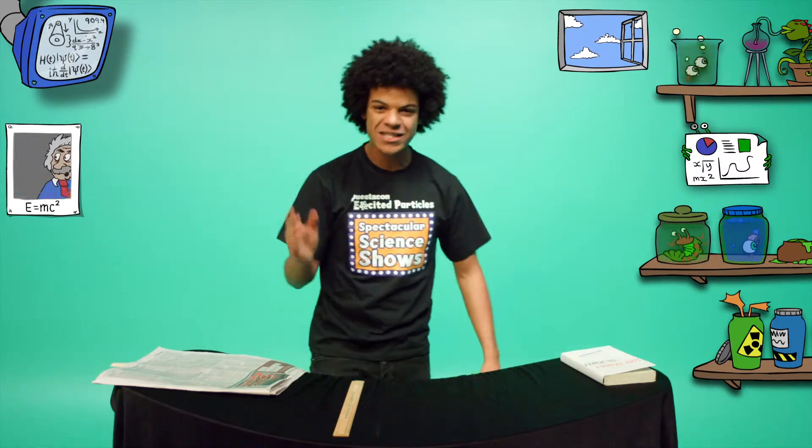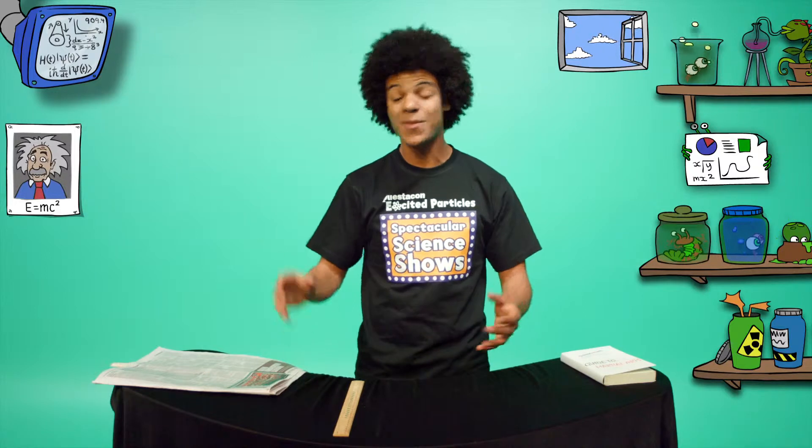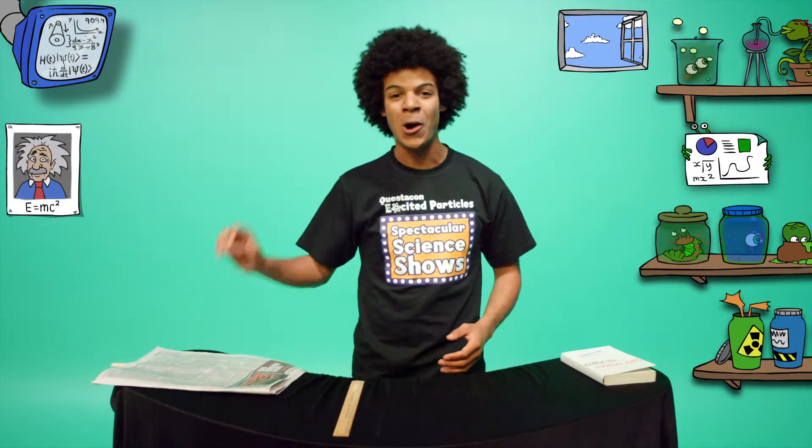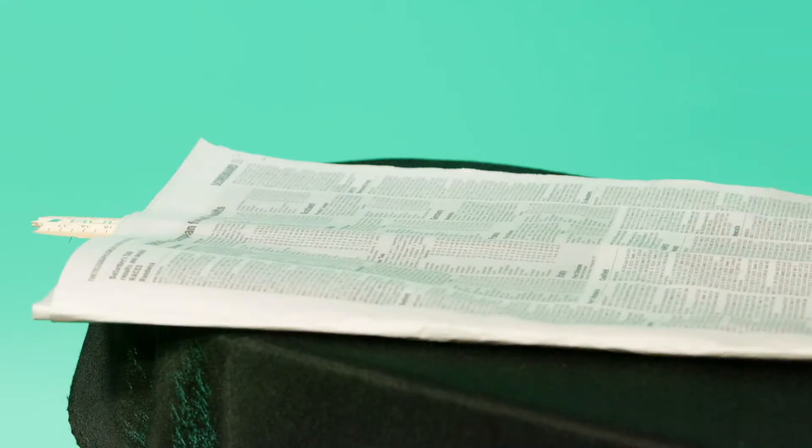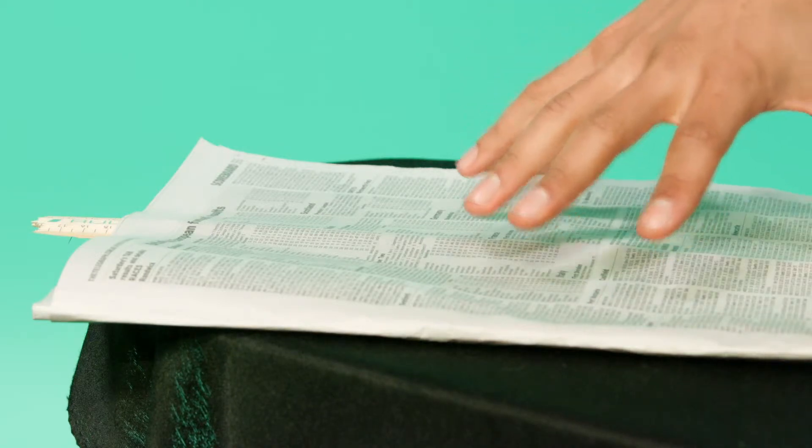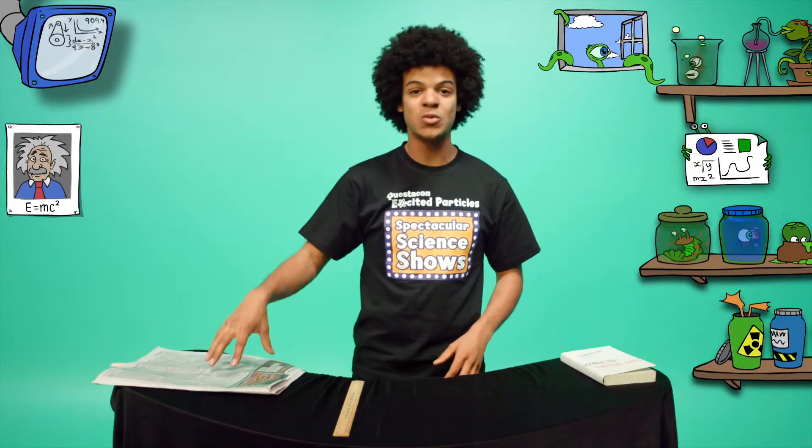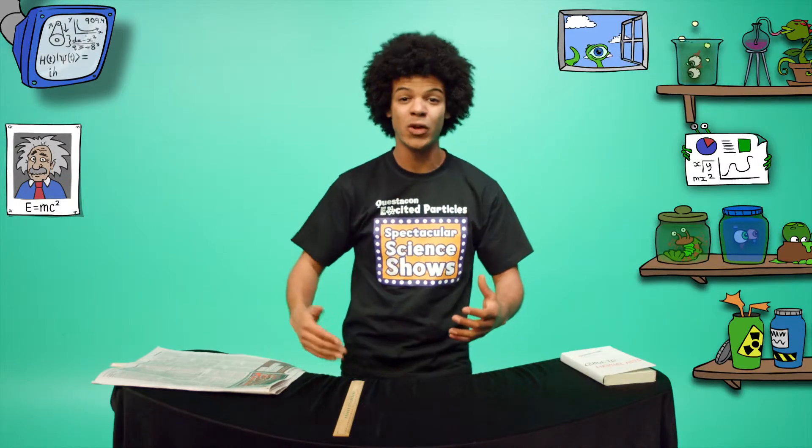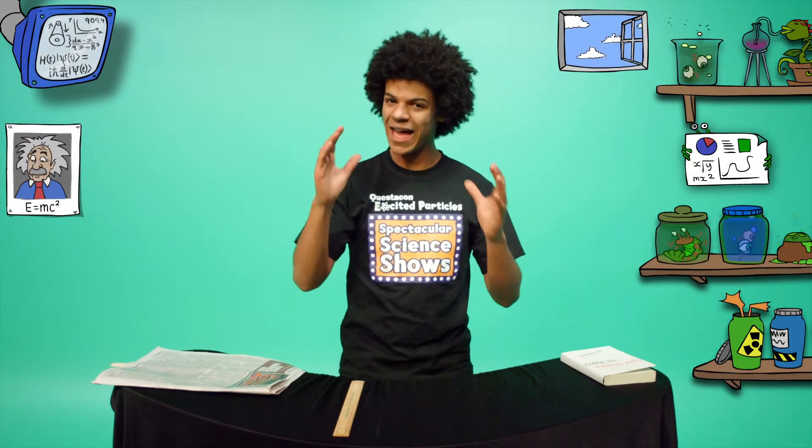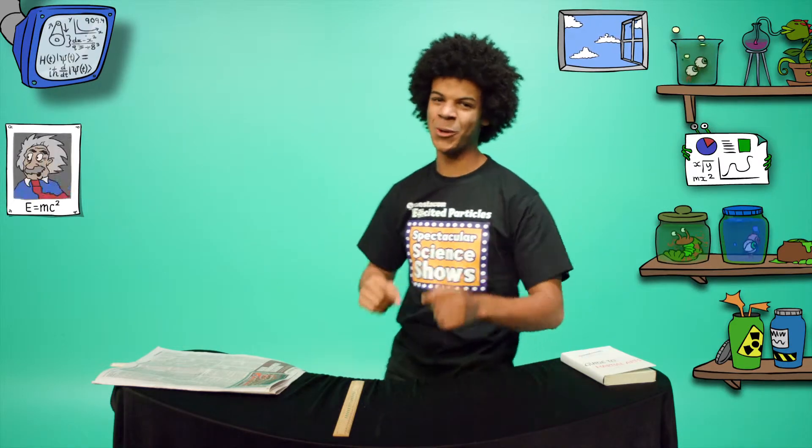I hit the ruler with the same great force, but this time the newspaper held the ruler onto the table. This sheet of newspaper weighed the same as the last one, but this sheet of newspaper has a lot more surface area, and the air pressure kept the newspaper onto the table and stopped the ruler from flipping up again. And the Hand of Fury was victorious at last.